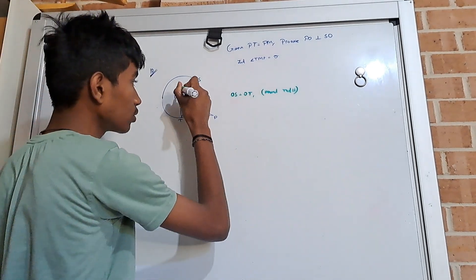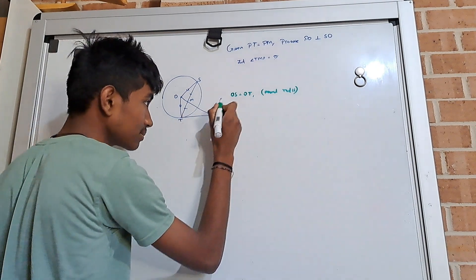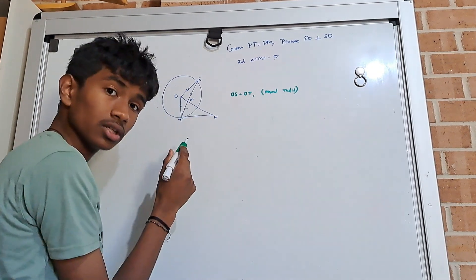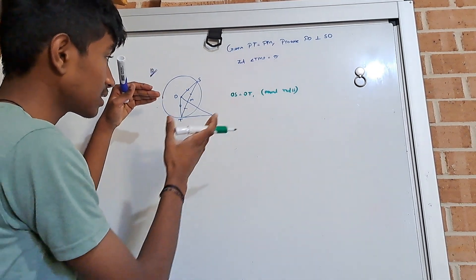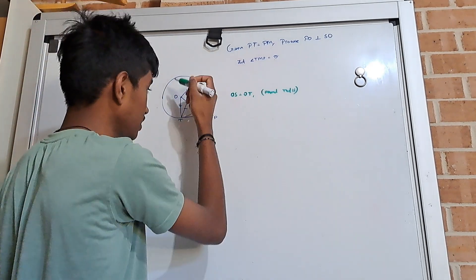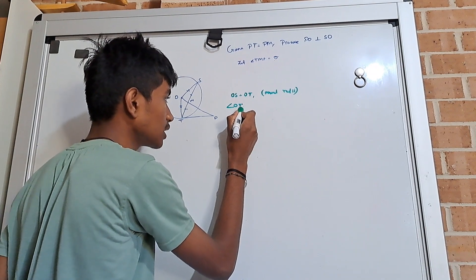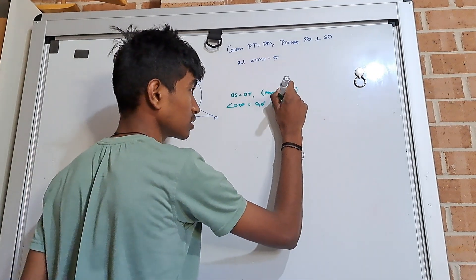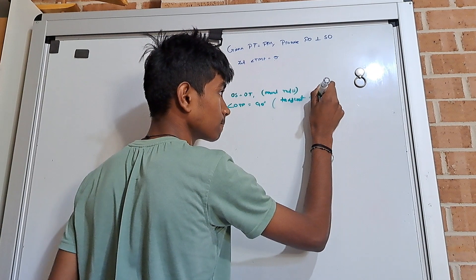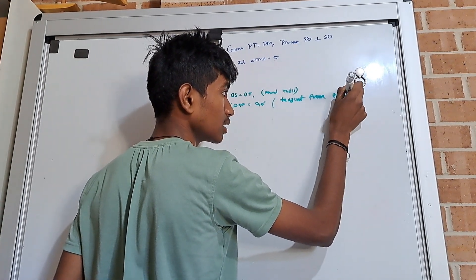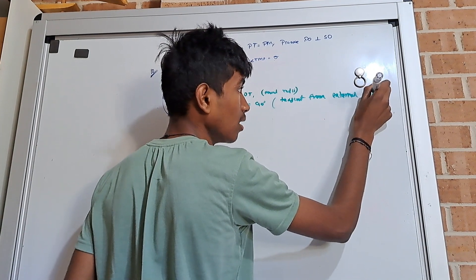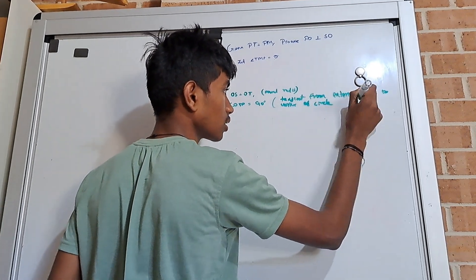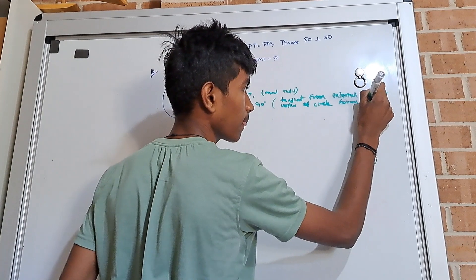We know that angle OTP — this angle — is 90 degrees, because of a tangent from an external point. The line coming from the center and touching the tangent at the vertex forms an angle of 90 degrees. So angle OTP is equal to 90 degrees because a tangent from an external point to the vertex of the circle forms 90 degrees.